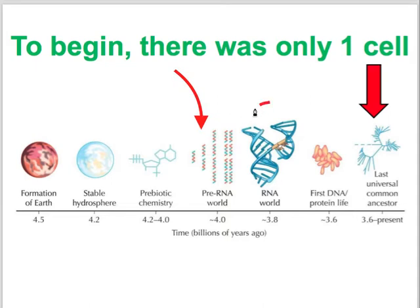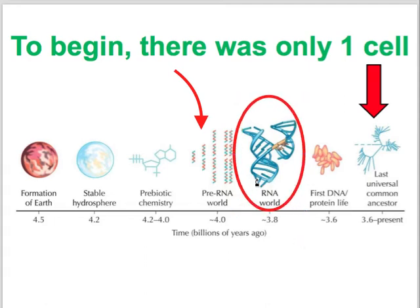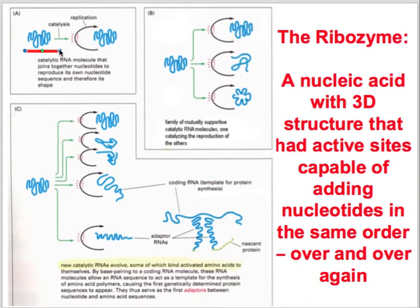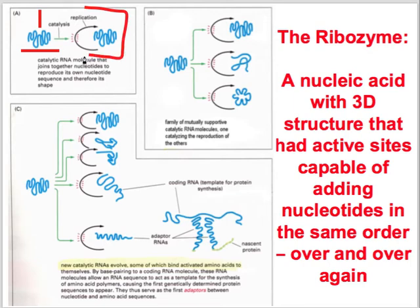RNA is theorized to have formed into a 3D structure, and this is the idea that it was the first living molecule — though we're still very much in the realm of chemistry. We won't get to the last common ancestor, the initial cell, for quite a while — about 200 million years. There was a 3D RNA structure with active sites made of nucleotides. On the outside, nucleotides could bind other nucleotides, and eventually something happened that would bind nucleotides in a sequence and put them together — the same sequence as the original. It started to replicate itself.